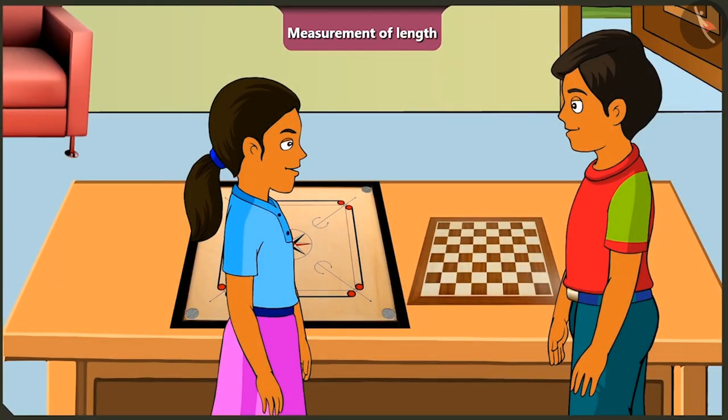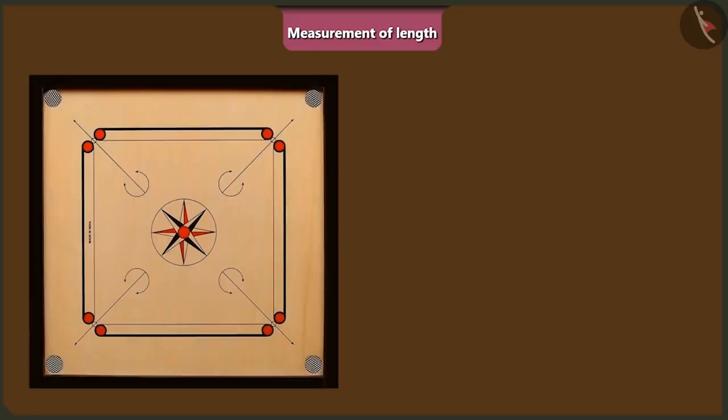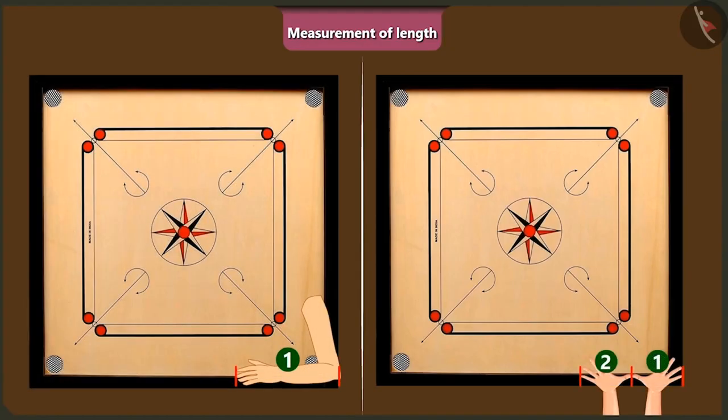Absolutely correct. So we can say that the length of a cubit of your arm is equal to 2 handspans of your palm.